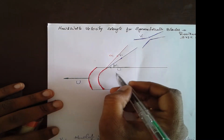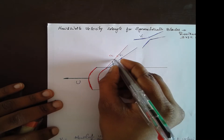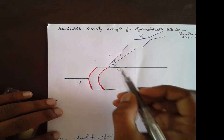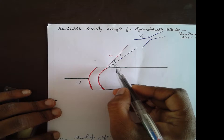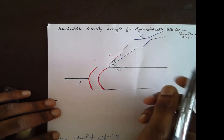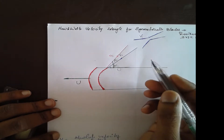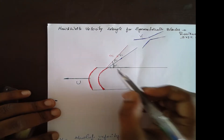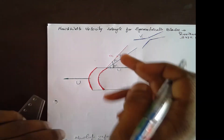With respect to the tangential speed u and v1, the angle is alpha1. With respect to u and vr1, the angle is beta1. Alpha1 is the fixed blade angle, stator blade angle, or nozzle angle. Beta1 is the rotor blade angle or moving blade angle.